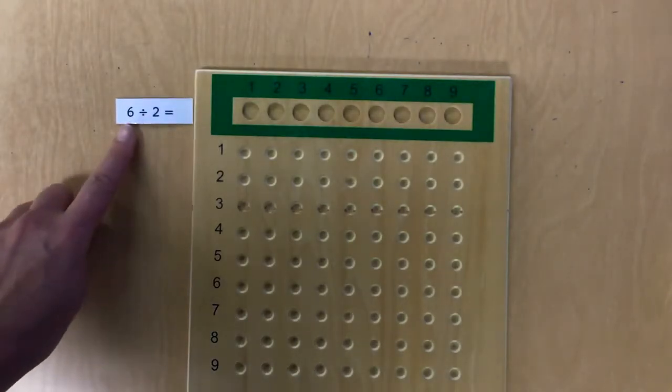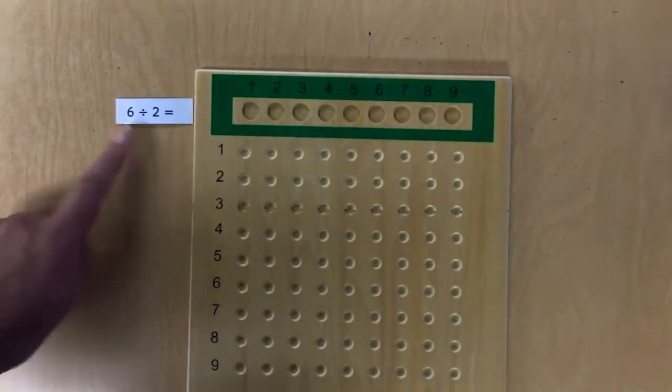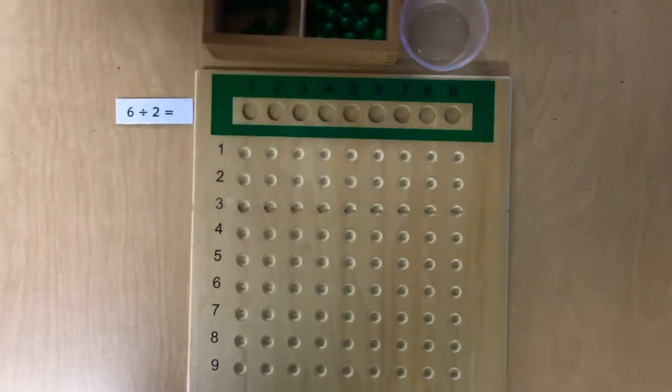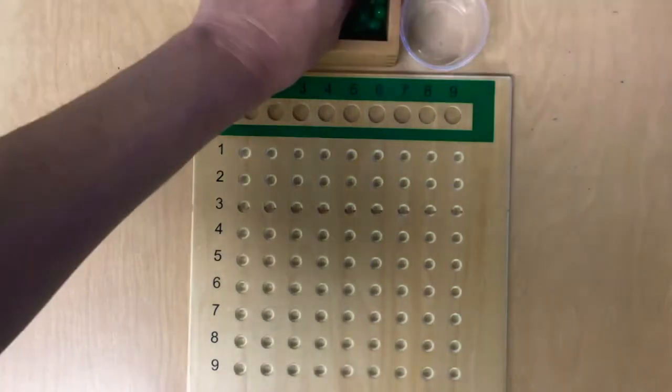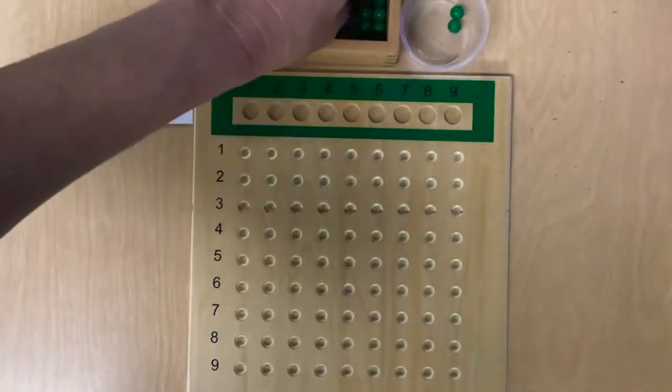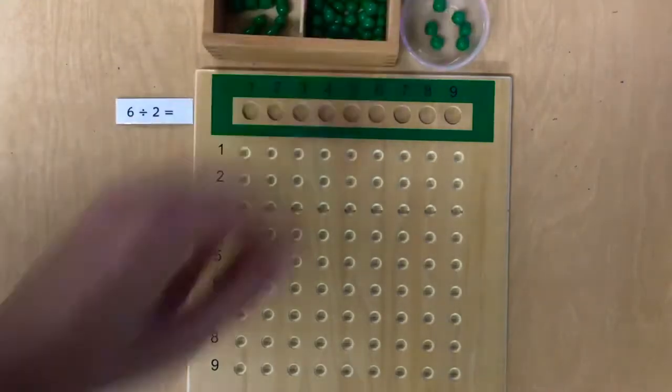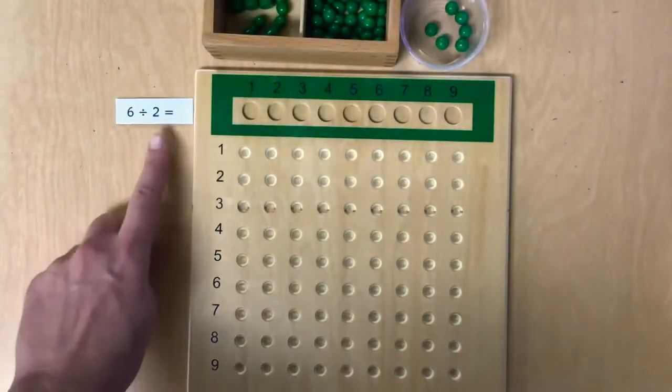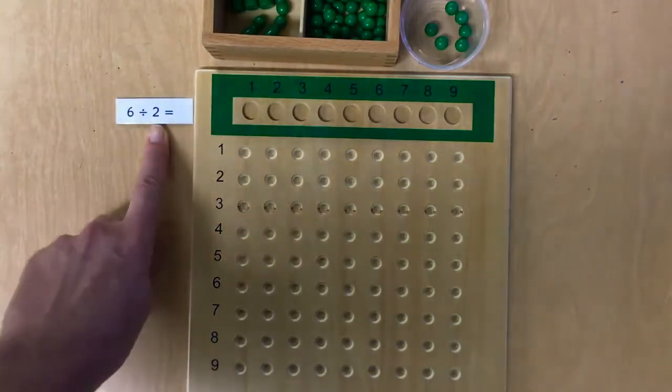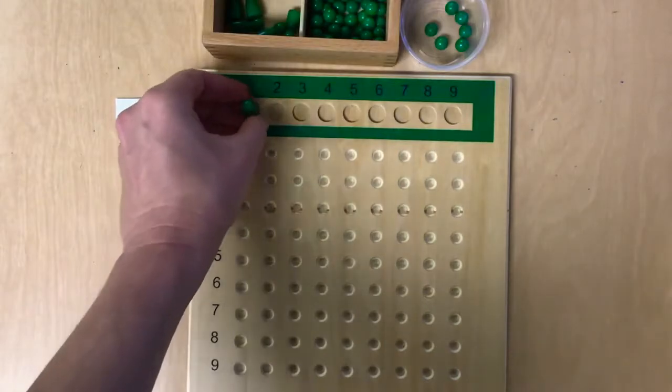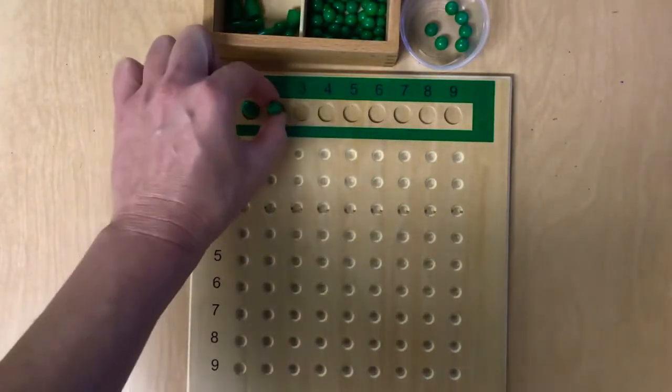So that is telling us we have 6 of the green beads. So let's count those out. 1, 2, 3, 4, 5, 6. And we are going to divide those amongst 2 Skittles or 2 people. So one goes there and one goes there.